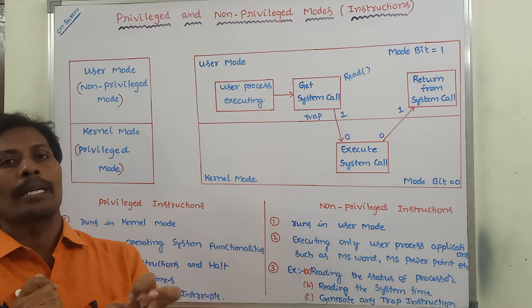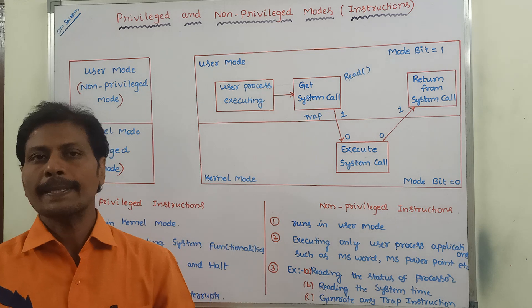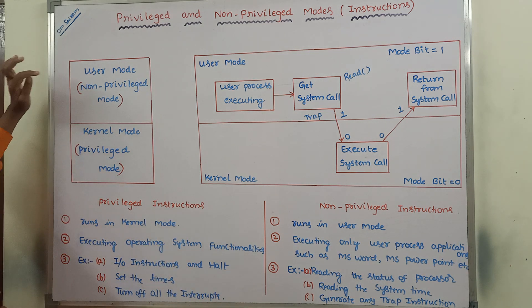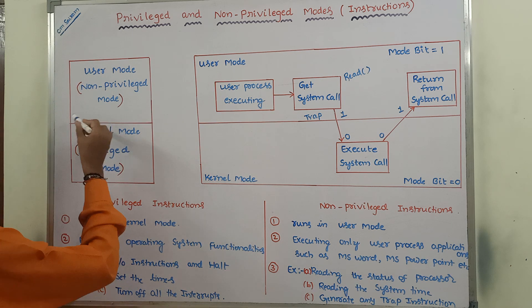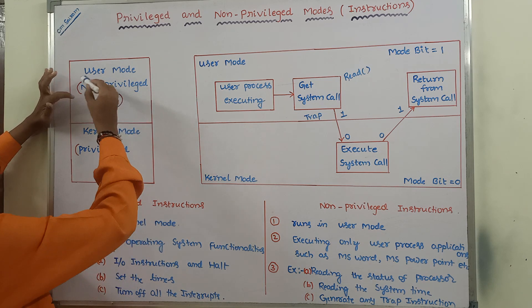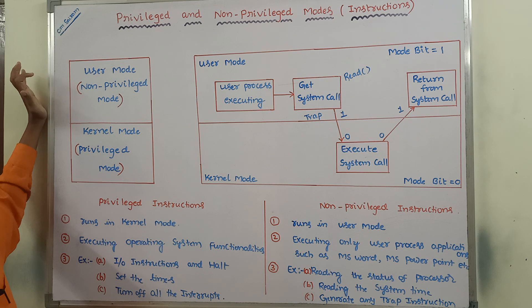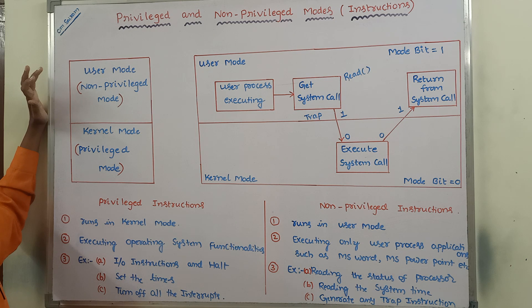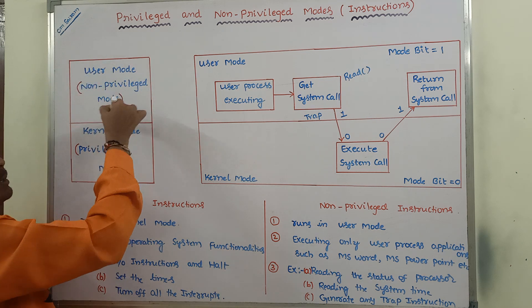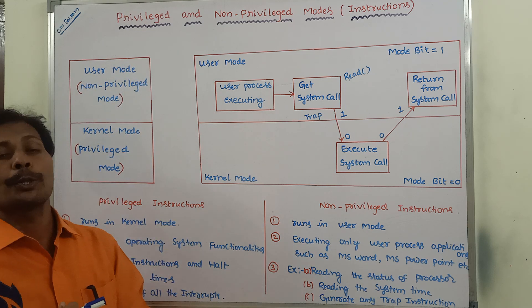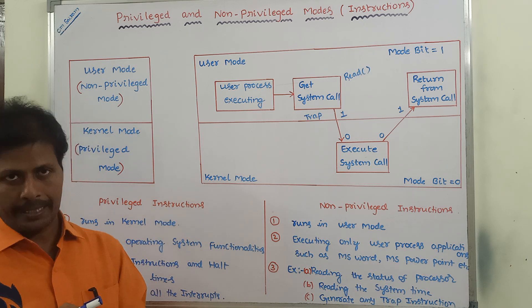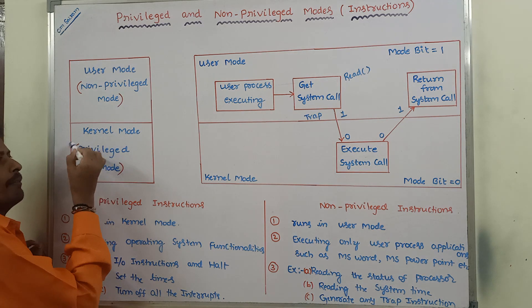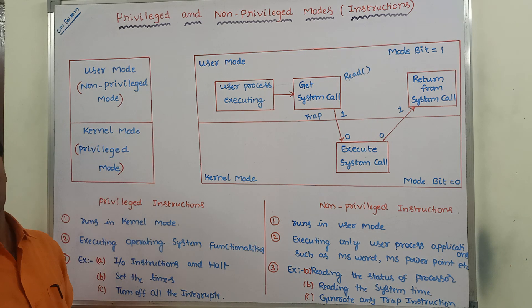For that purpose, a system can be operated in two modes. Privileged mode can also be called as kernel mode, whereas non-privileged mode can also be called as user mode. In that user mode, we are executing the user applications such as MS Word, MS PowerPoint, and MS Excel.